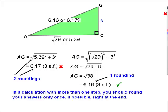As a general principle, in a calculation with more than one step, you should round your answers only once if possible, right at the end. In other words, leave any rounding till the end of the calculation.